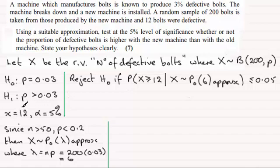I normally write a statement like this if you've been watching my videos in the past on hypothesis testing. If you watch the previous video, I would have written: reject the null hypothesis if the probability of getting more than 12 defective bolts given that X is distributed as a Poisson distribution approximately turns out to be less than or equal to 5%.